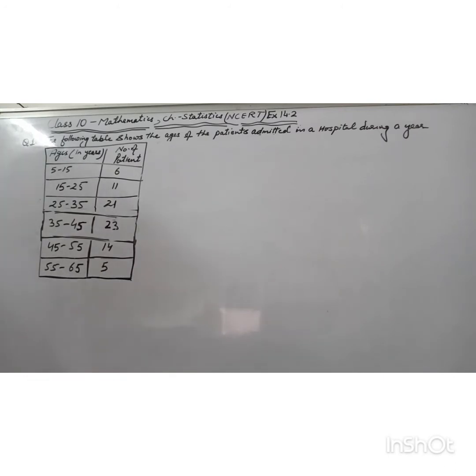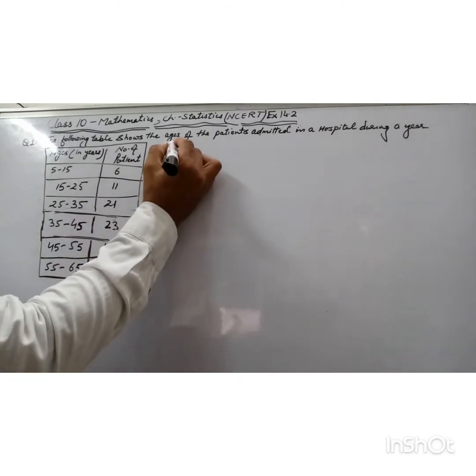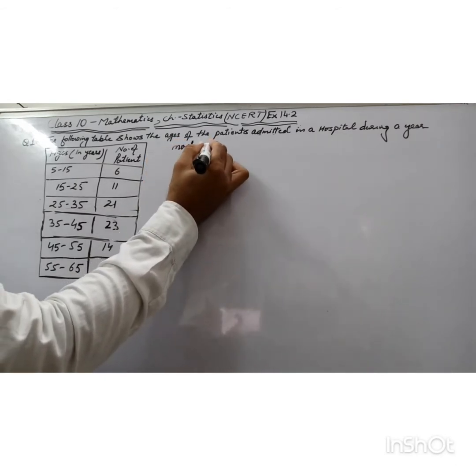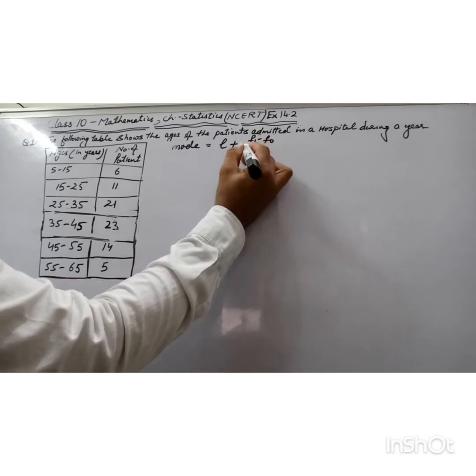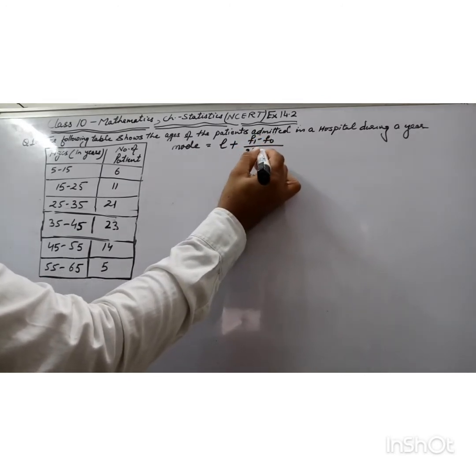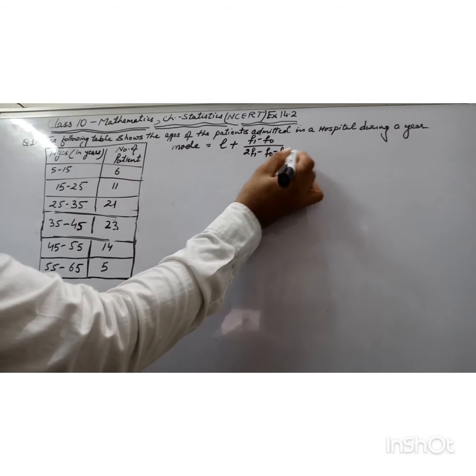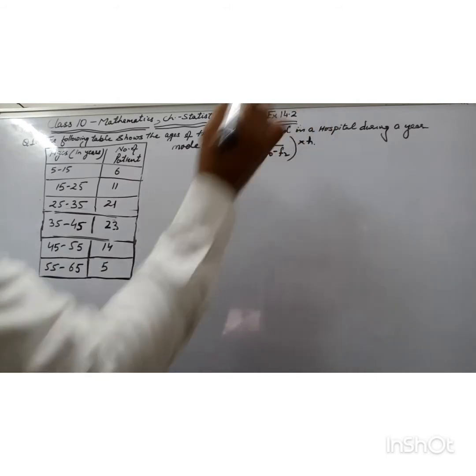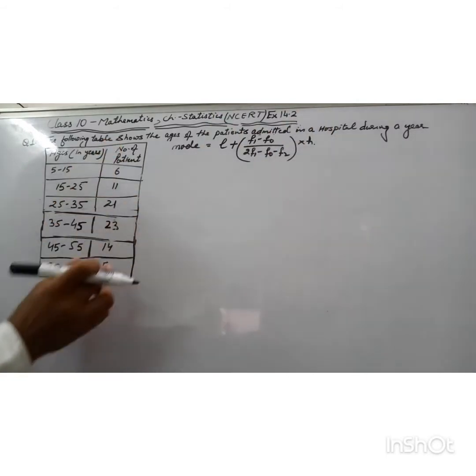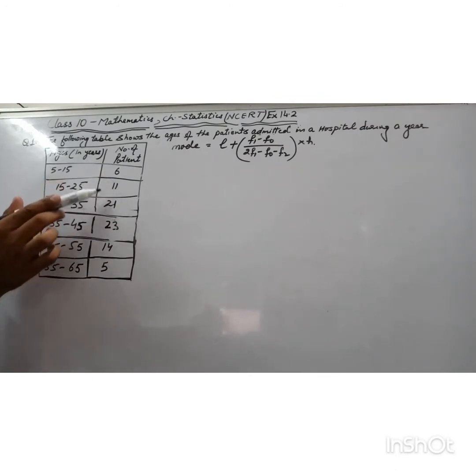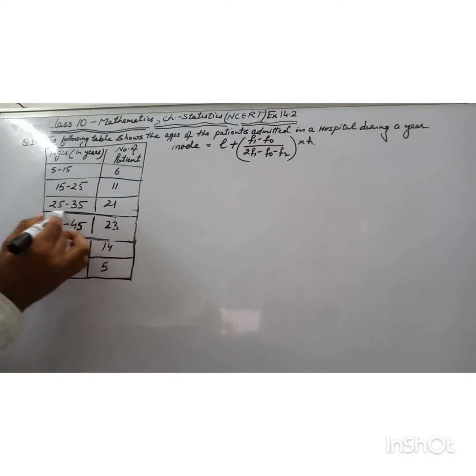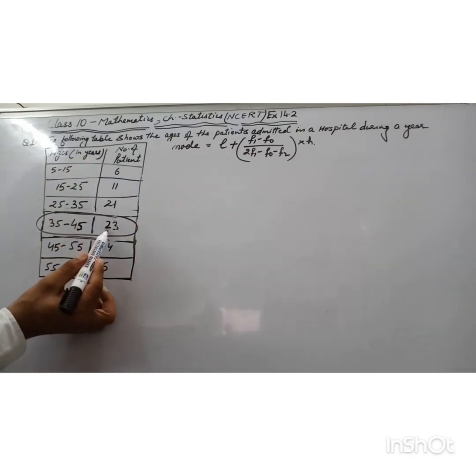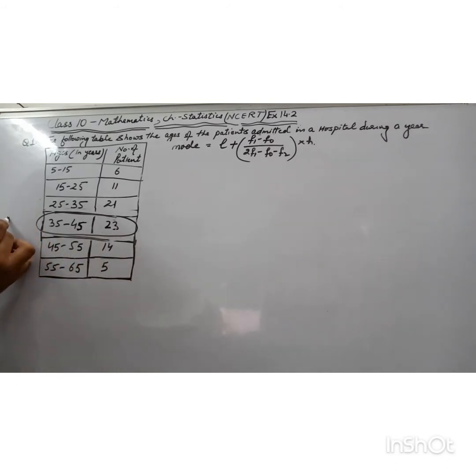The formula for mode is L + [(f1 - f0) / (2f1 - f0 - f2)] × h. If you see here, the maximum frequency is 23, so this is our modal class.